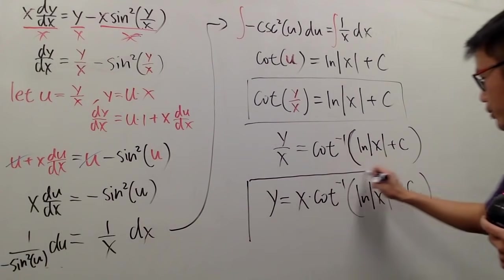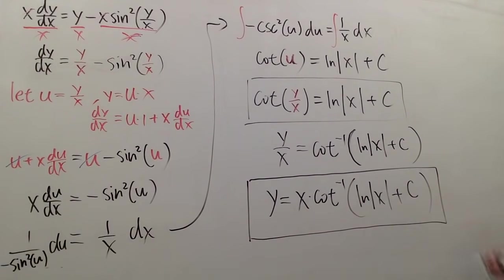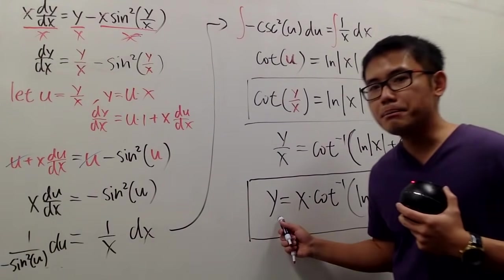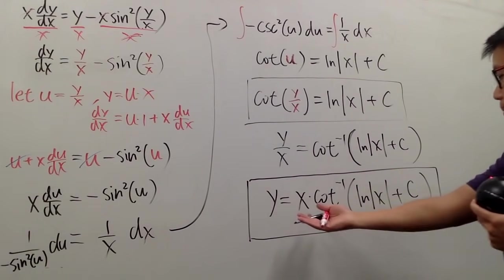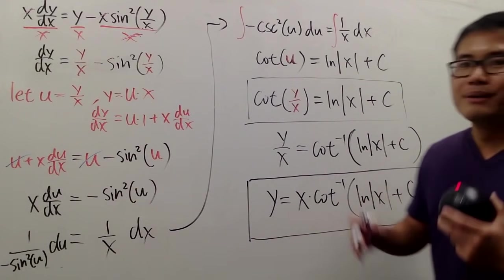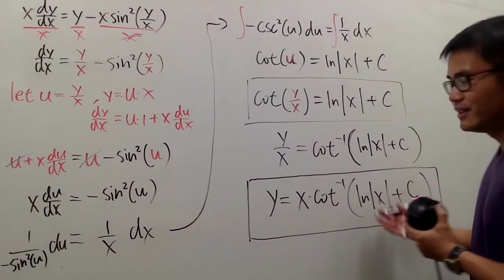So here you have it. This is the explicit solution when you have the y by itself. And of course, if you have an initial condition, you can also now plug in, and then you can solve for c from there. But anyway, hopefully you like this video. See you later.